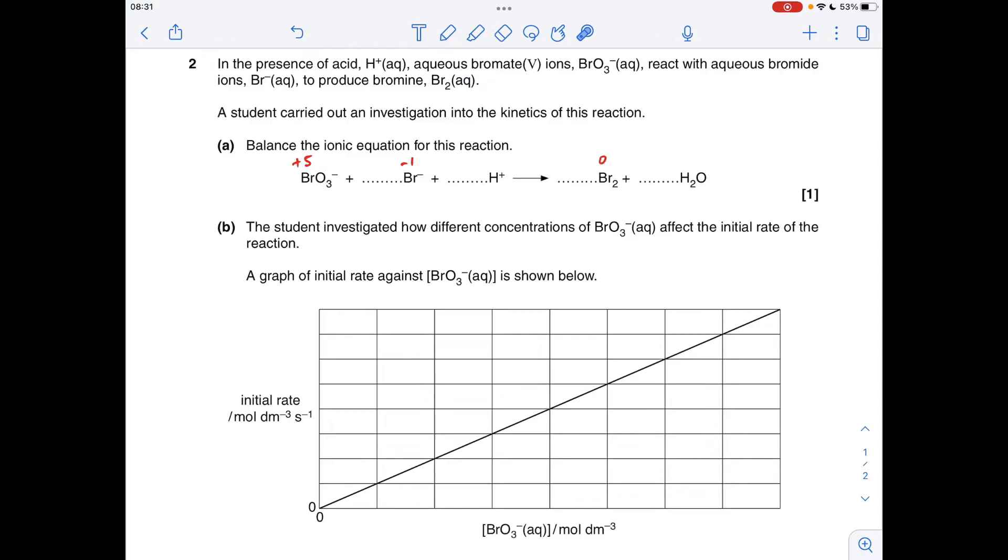And then the oxidation process, you've got minus one up to zero, so that's an increase in one. So each Br minus ion is losing one electron. What you can't have is the electrons to not balance each other, so the way we get around that is we need to match the oxidation number change.